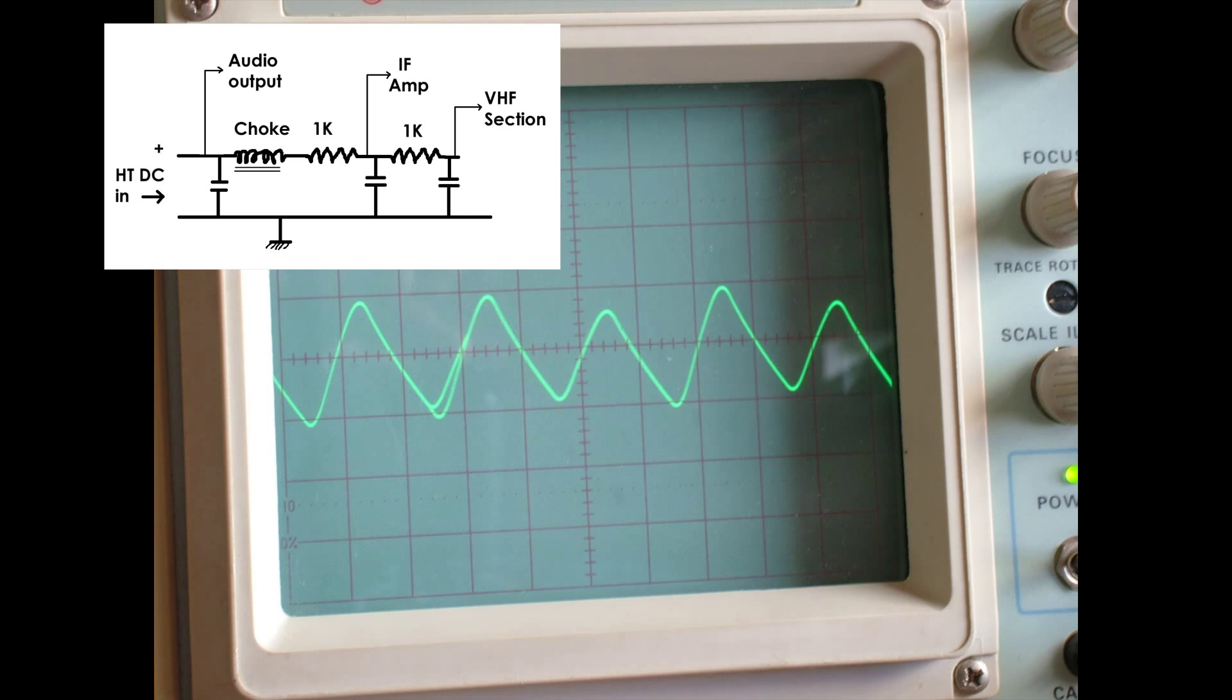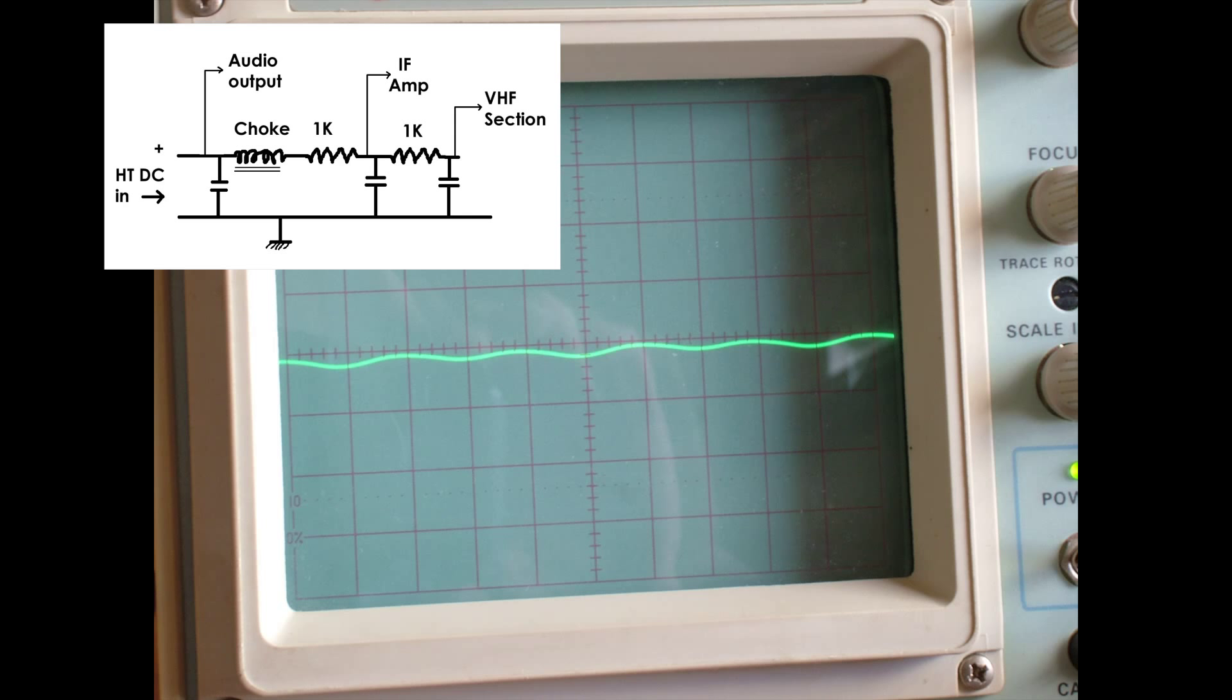So that's the trace that is associated with the supply to the audio output that's shown on that little white box up to the left. This next image shows the ripple after the choke in the 1K resistor and this is the feed to the IF amp. And again the deflection is set at 10 volts per centimetre.